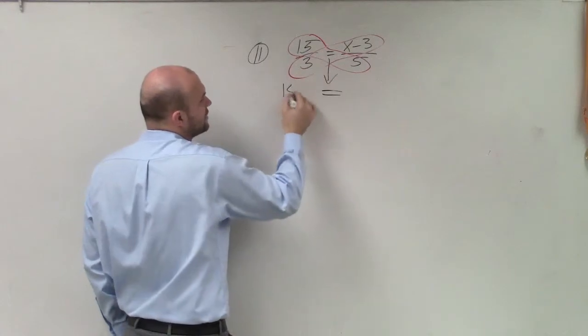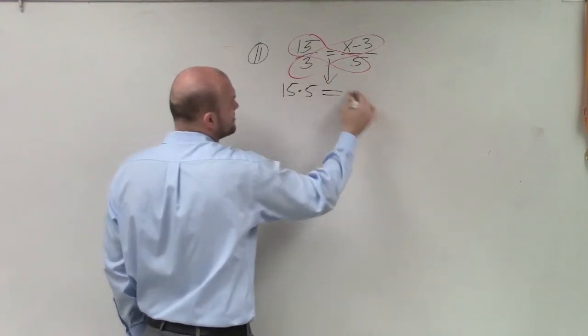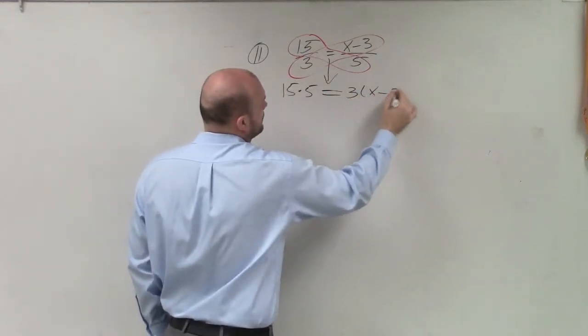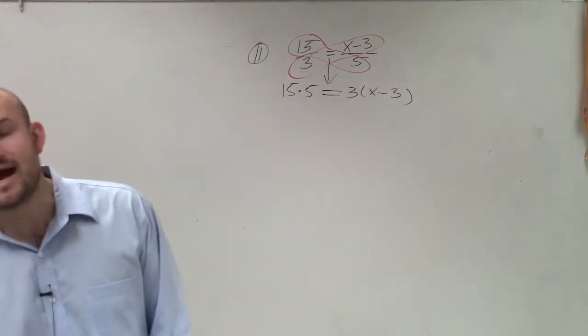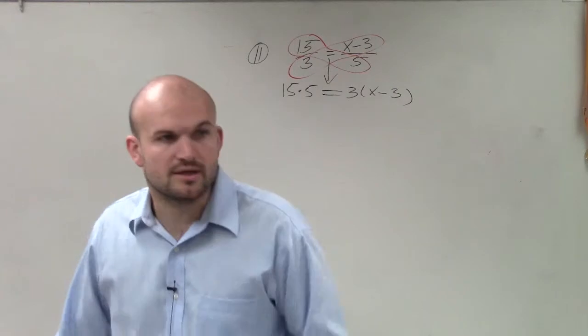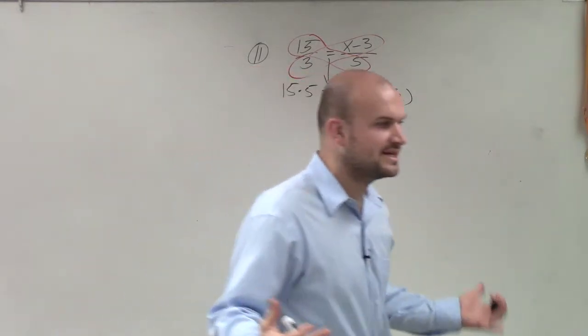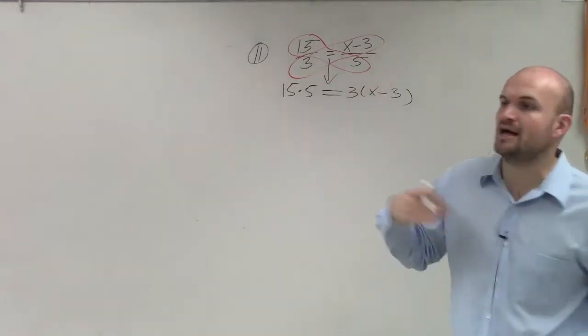Make sure you write down your cross products. When you're multiplying a number by a binomial or another expression, make sure you put it in parentheses so that's going to remind you to apply distributive property.